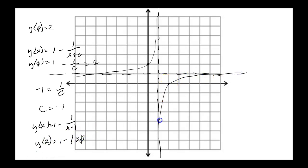Changing the initial condition changes your graph, changes the shape, and changes which wing of the graph you're on. Different initial conditions give different particular solutions and different asymptotic behavior.